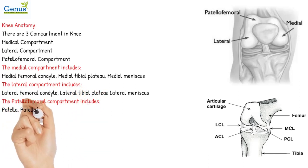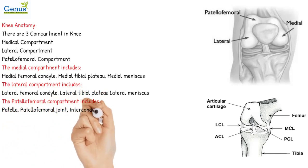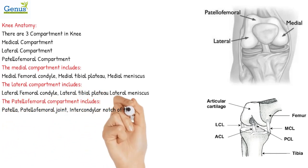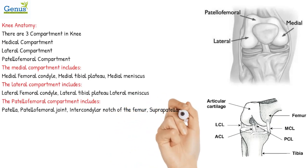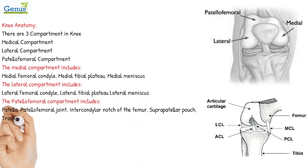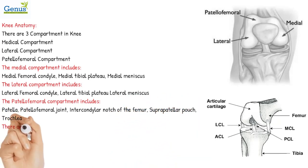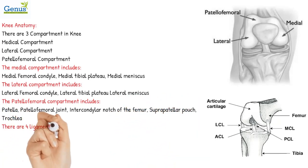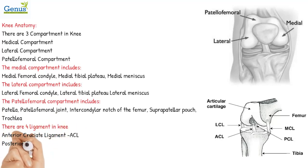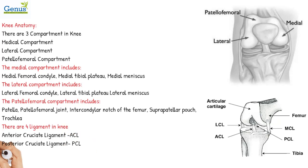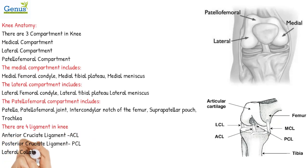The patellofemoral compartment includes the patella, patellofemoral joint, intercondylar notch of the femur, suprapatellar pouch, and trochlea. There are four ligaments in the knee: the anterior cruciate ligament (ACL), posterior cruciate ligament (PCL), lateral collateral ligament (LCL), and medial collateral ligament (MCL).